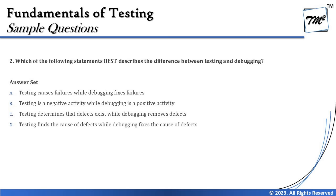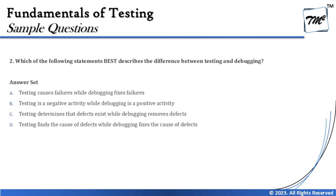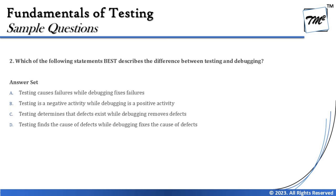Question 2 asks: which of the following statement best describes the difference between testing and debugging? To recall quickly — testing identifies defects, while debugging is responsible for analyzing failures, performing root cause analysis, and fixing them. Option A says: testing causes failure while debugging fixes failures. This is tricky — testing finds failures, but debugging does not fix the failure per se. We fix the defect, not the failure. Each keyword matters here.